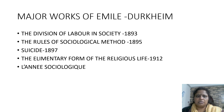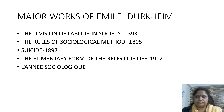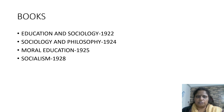Major works of Emile Durkheim: The Division of Labor in Society (1893), The Rules of Sociological Method (1895), Suicide (1897), The Elementary Forms of the Religious Life (1912), Education and Sociology (1922), Sociology and Philosophy (1924), Moral Education (1925), and Socialism (1928).